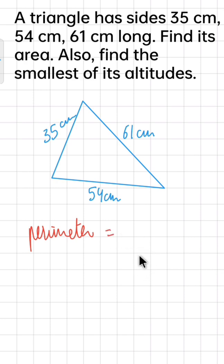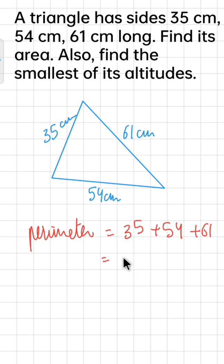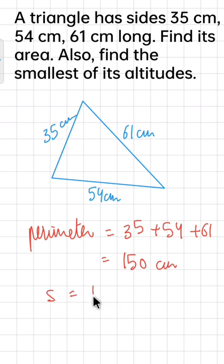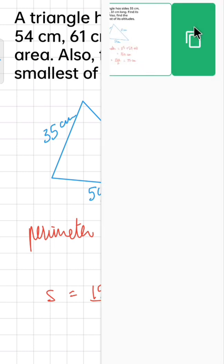We find the perimeter by adding all sides: 35 plus 54 plus 61, which gives 150 centimeters. The semi-perimeter is half of the perimeter, so that is 75 centimeters. I hope this is clear — let's find the area on the next page.